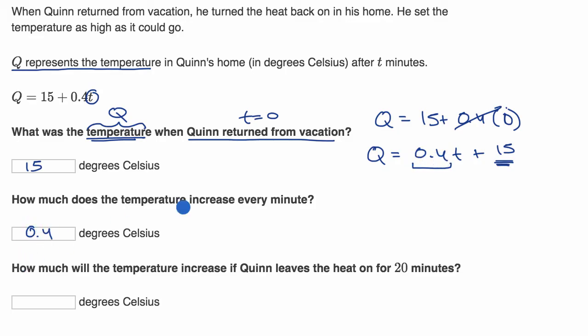So you could do it that way. You could try out some values. You could say, let me think about what Q is going to be based on T. So at time T equals zero, right when he got home, we already figured out that the temperature is 15 degrees Celsius.